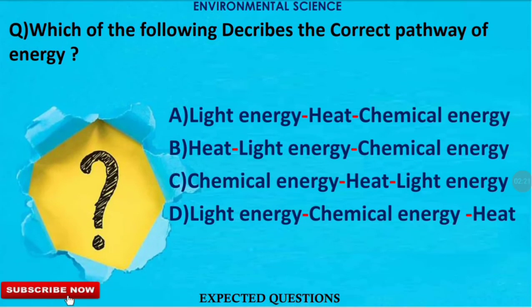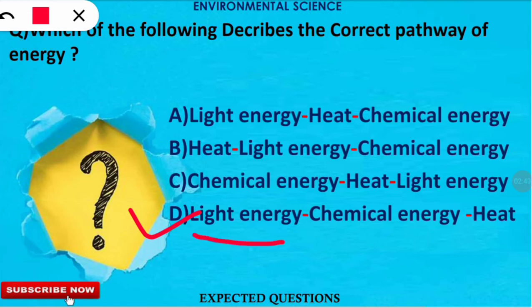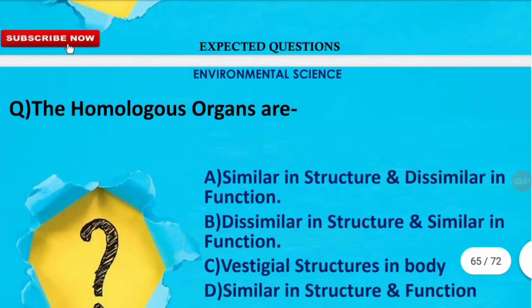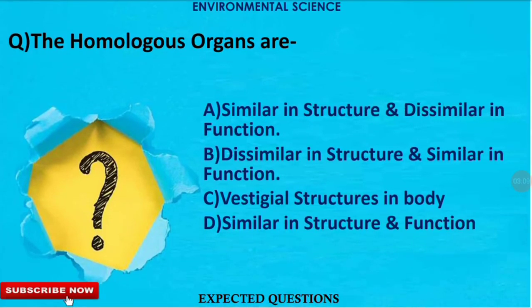The next question is: which of the following describes the correct pathway of energy in an ecosystem? The correct option is option D. Light energy, the major source of energy for any ecosystem, gets converted into chemical energy first with the help of autotrophs (plants), and then that energy is utilized and heat is released at other trophic levels.